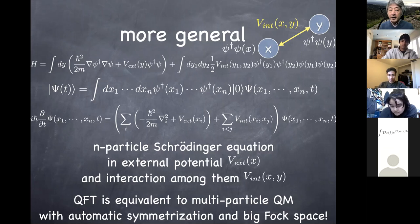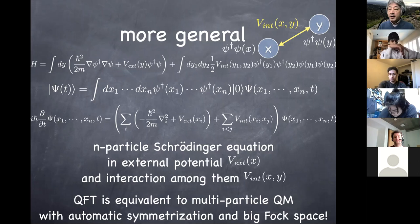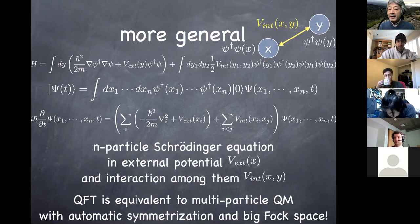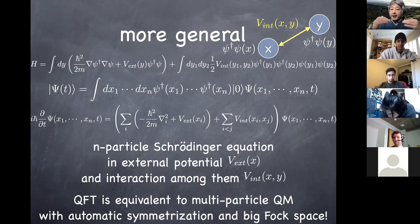From the QFT point of view, you don't specify how many particles you have — you can always write down a state and study it. But for each N-particle state you can work out the time-evolution equation for the coefficient function capital Ψ, which turns out to be exactly the Schrödinger equation of multi-particle quantum mechanics with a fixed number of particles. For each N, you correctly reproduce the Hamiltonian with the right number of kinetic terms, external potential terms, and interaction pairs — without having to specify N in QFT ahead of time.